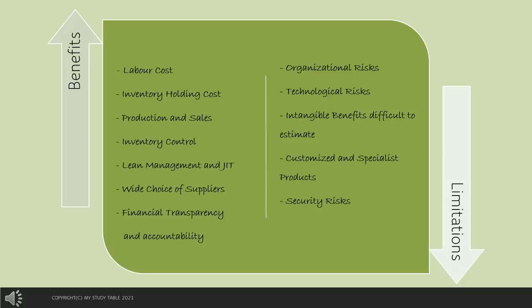Moving on to the benefits of e-procurement: the more the procurement process can be automated, the better it would be for the organization in terms of realizing financial benefits. Labor cost would reduce and so will the inventory holding cost. Production and sales should be higher due to more accurate monitoring of demand and greater ordering accuracy. There would be greater control over inventory, quicker ordering, and it would be easier to implement lean management and just-in-time manufacturing systems. The firm may also benefit from a wider choice of suppliers and greater financial transparency and accountability.